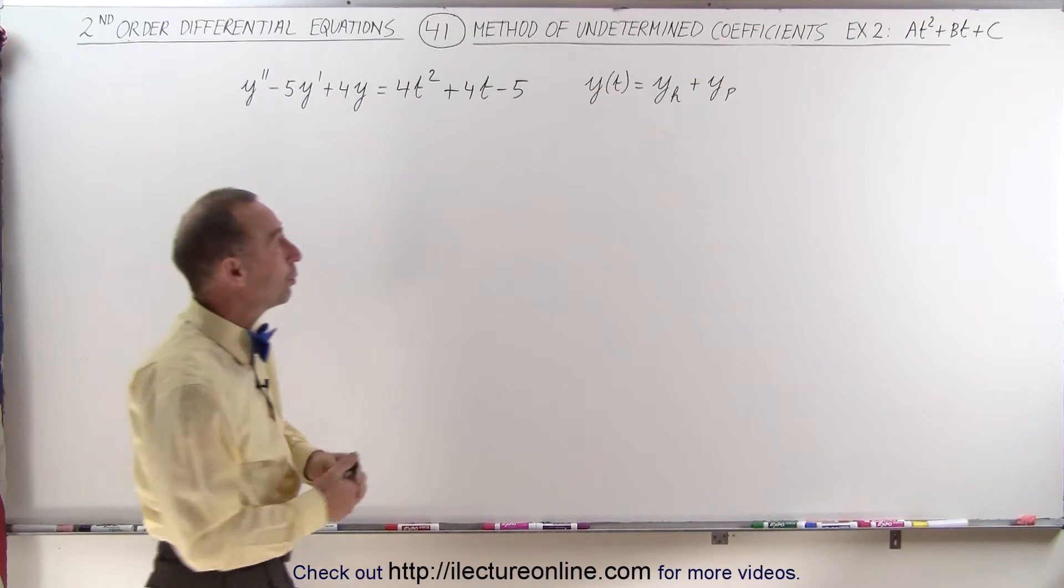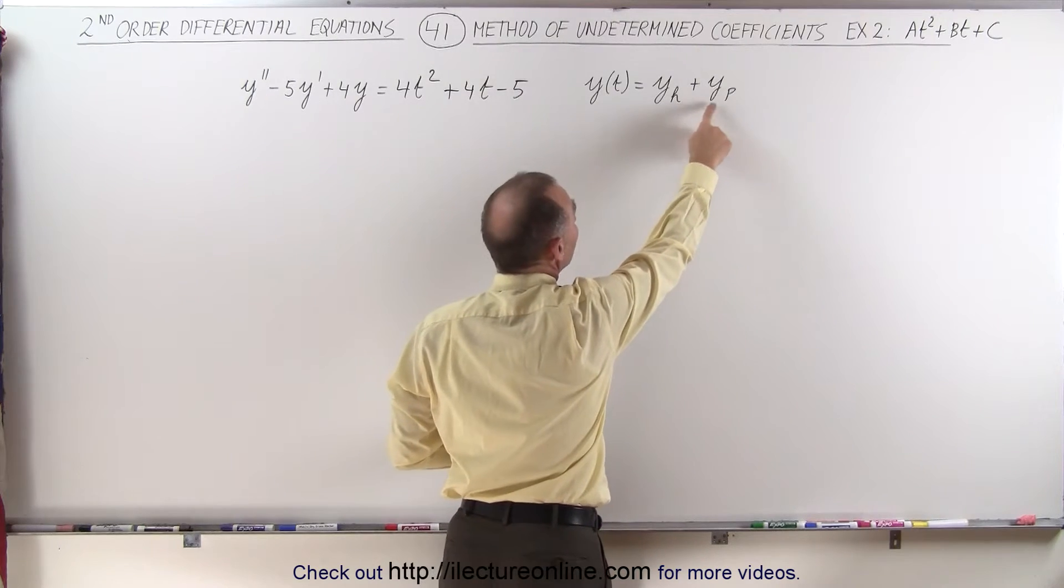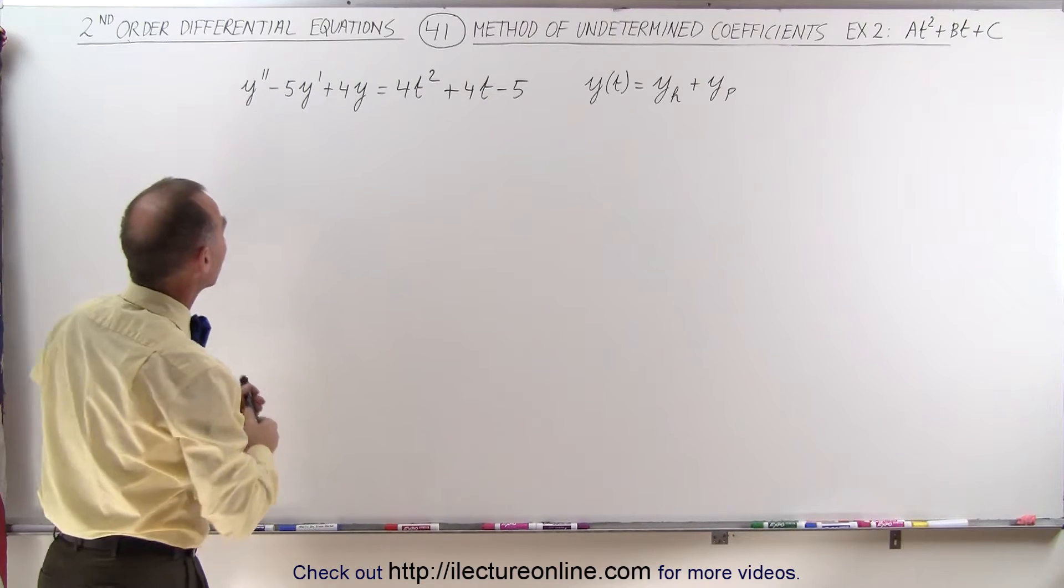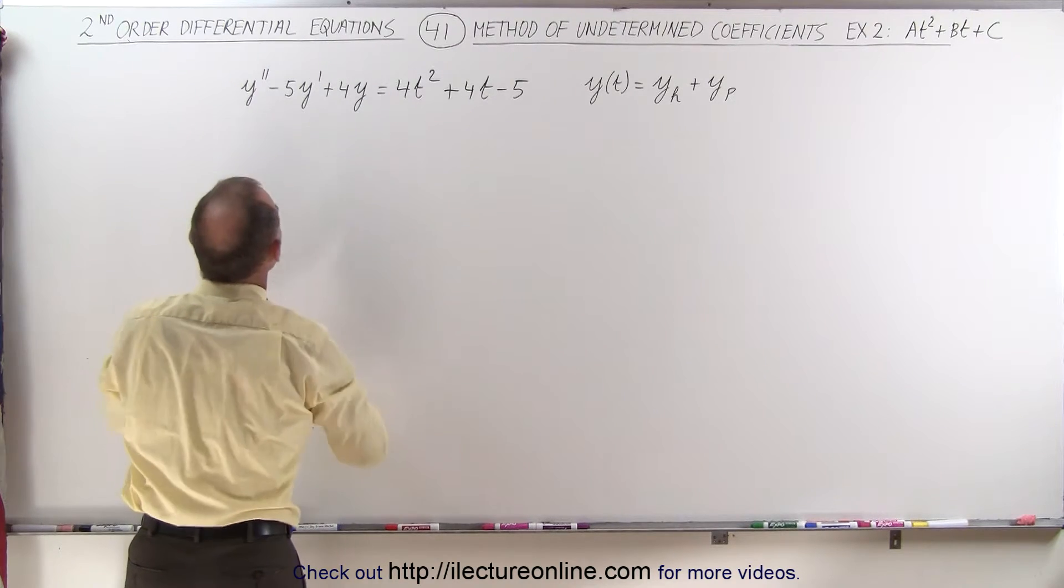Again, the solution will be the sum of the homogeneous solution plus the particular solution. First, let's find the homogeneous solution by turning this into a homogeneous equation.